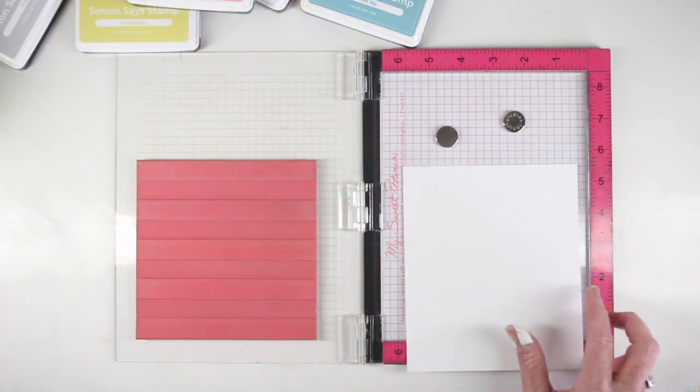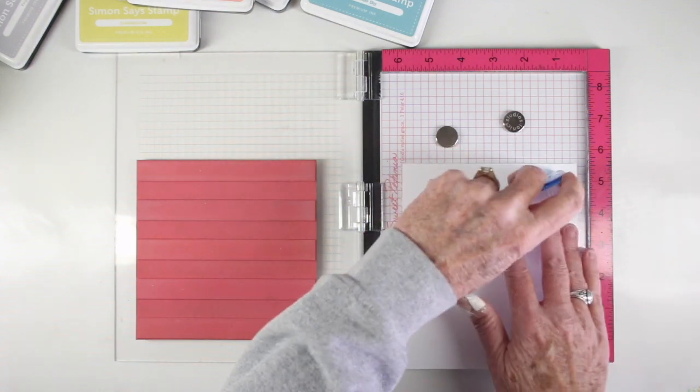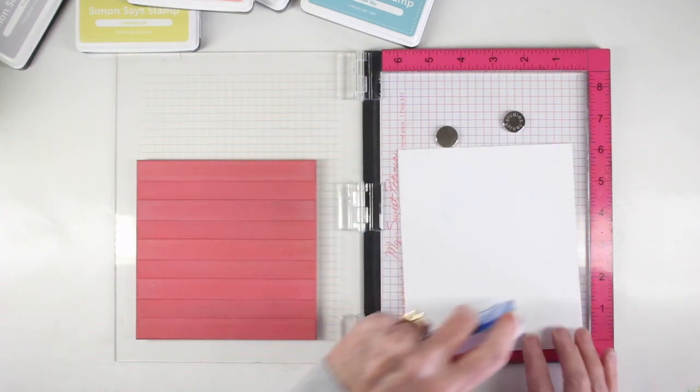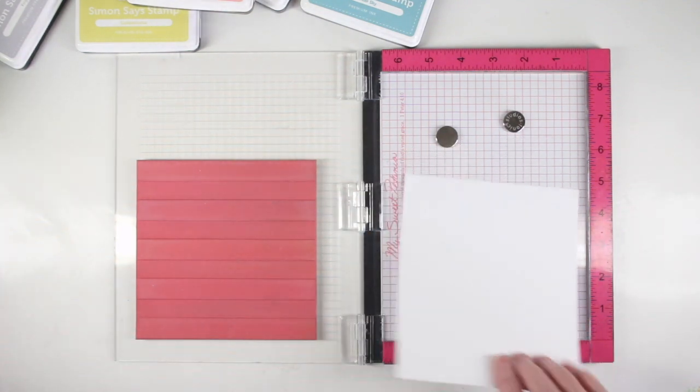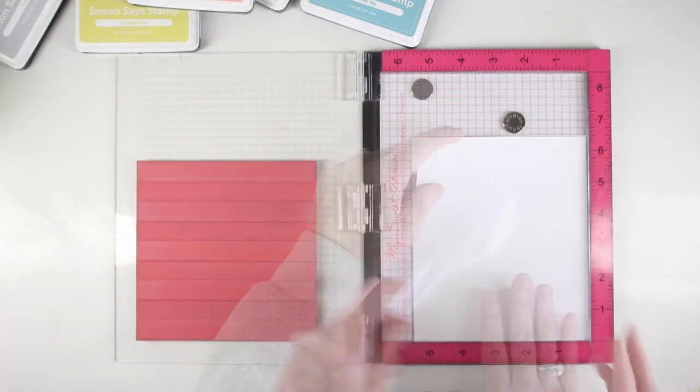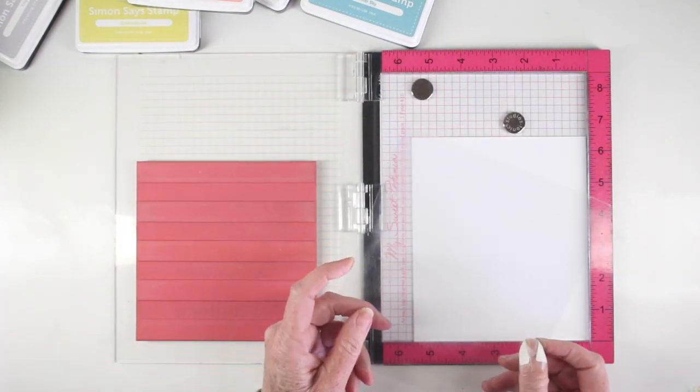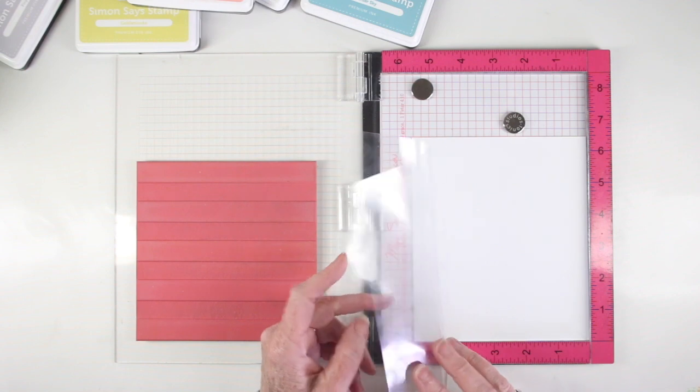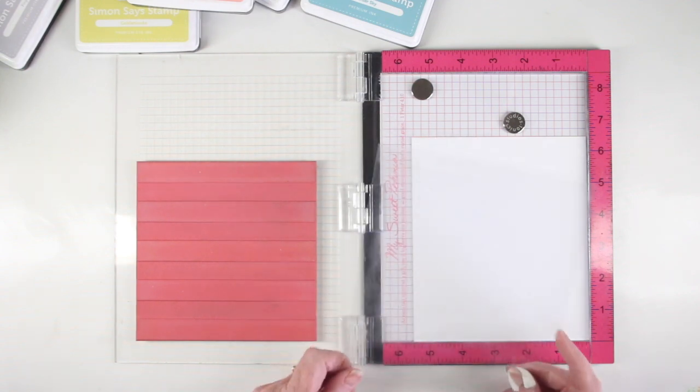Before I get started, I want to make sure that the paper sits in there, and since my stamp will fill up the entire paper I've added a little bit of adhesive to the back. I'll also be using the sheet that the cling stamp came on to help me add my colors to the stamp.